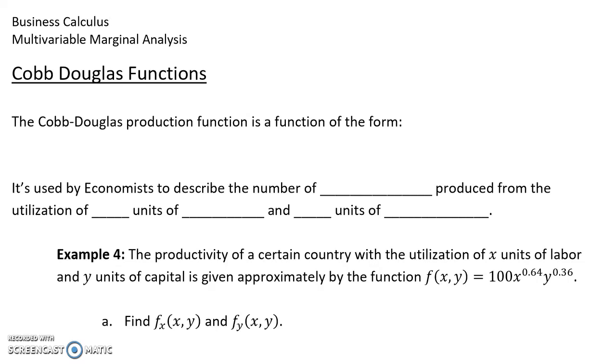Next, we want to look at applying multivariable marginal analysis to a very specific type of function, referred to as a Cobb-Douglas function. A Cobb-Douglas function is a function of the form f(x,y) equals some constant k times x to the m power, y to the n power, where each of these constants k, m, and n would all be greater than zero.